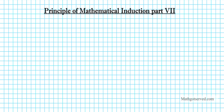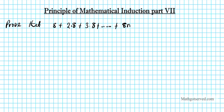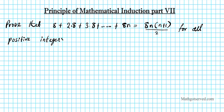Good day students, welcome to part 7 of our mathematical induction series. In this clip we're going to be going over the following example. We're going to prove that the given statement — 8 plus 2 times 8 plus 3 times 8, continuing that pattern, plus 8n equals 8n times n plus 1 over 2 — for all positive integers n.